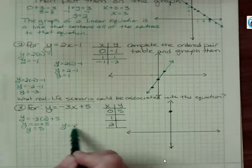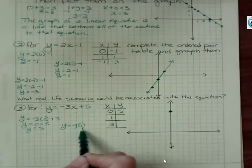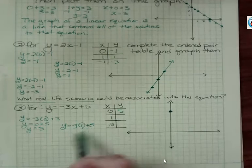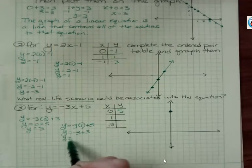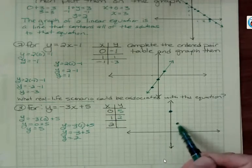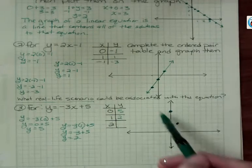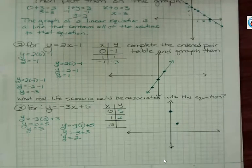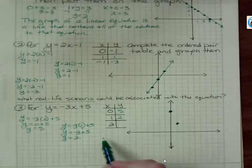Then I have negative 3 times 1 plus 5, and y equals 2. So I have the point 1, 2. So you can see that our line is going to be going down. We're losing. This person is losing 3 per day.